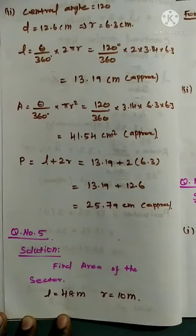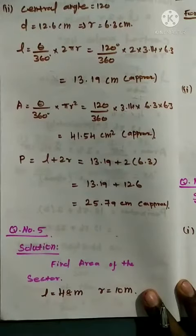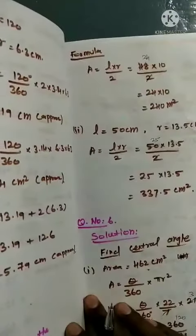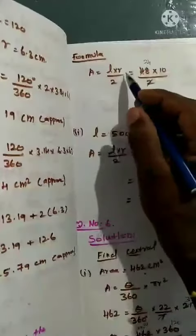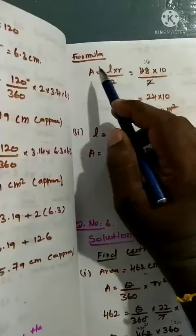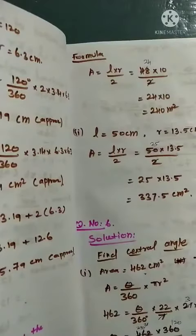Length is equal to 48m and R is equal to 10m. So here we are going to get the area of the sector. The area formula is A equals length into R divided by 2.